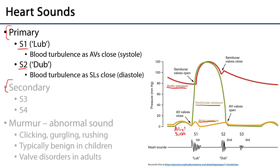As ventricular pressure rapidly rises, one of the first events is the closure of those atrioventricular valves. Blood pushes against the valve cusps. They're held very tightly by the chordae tendineae, and the papillary muscles are also contracting to tug on those chordae tendineae, and as a result, the valve cusps are brought into close approximation for closure.